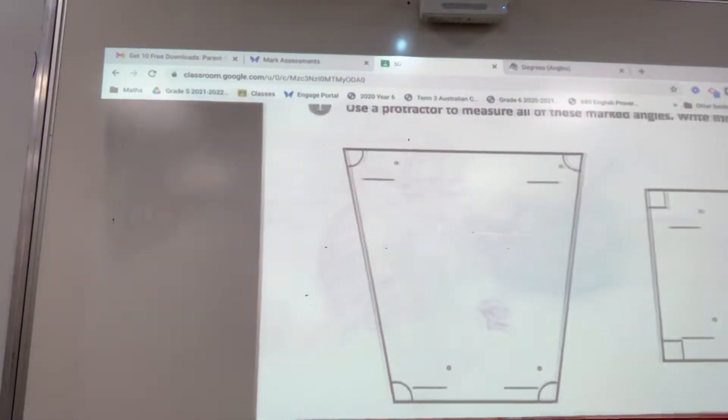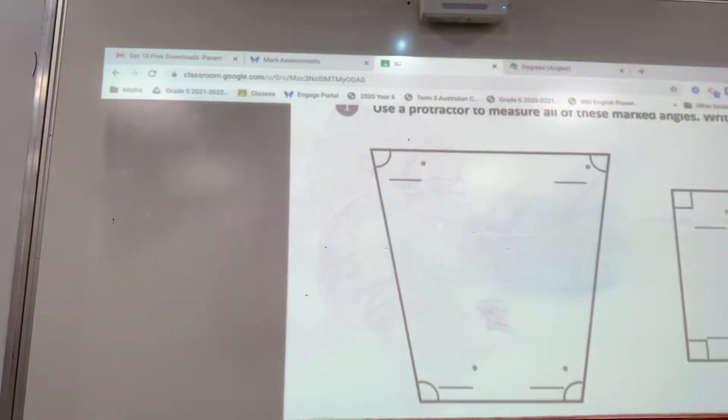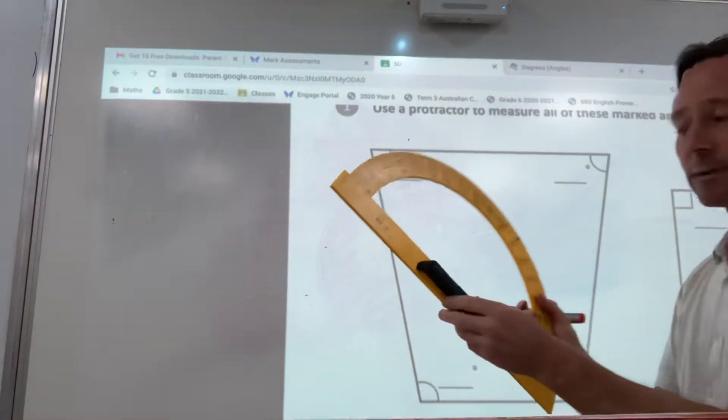The problem we have is this one here. There are no square sides. So what do we do? All right, that's when our protractor comes out.